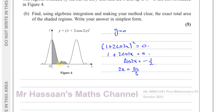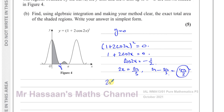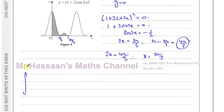We need the second solution. For a cosine equation, the second solution is 2π minus the calculator answer: 2π − 2π/3 = 4π/3. So 2x = 4π/3, therefore x = 2π/3. This is the value of a — the second place the curve touches the x-axis — so we integrate up to x = 2π/3.